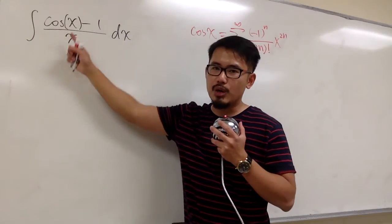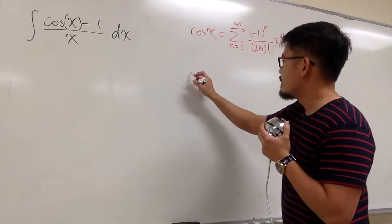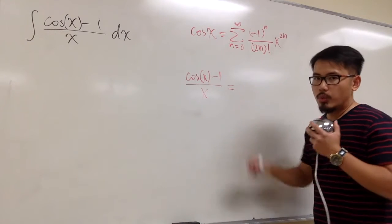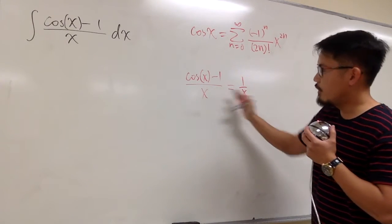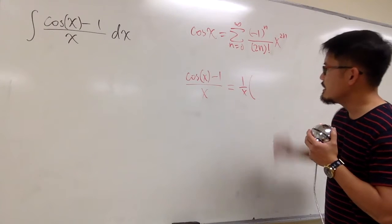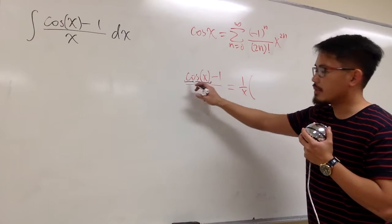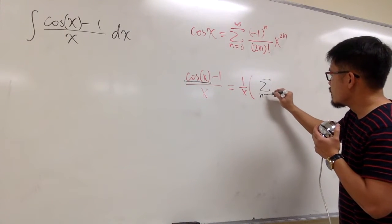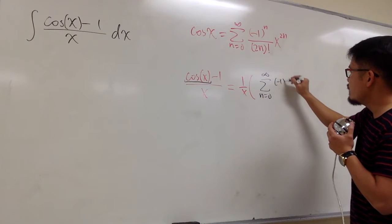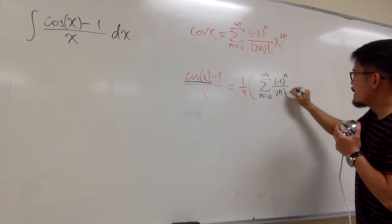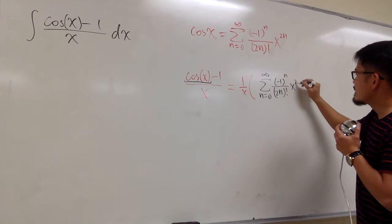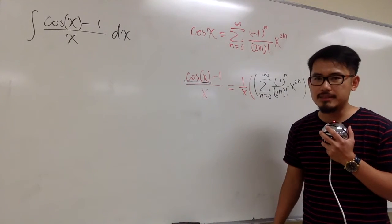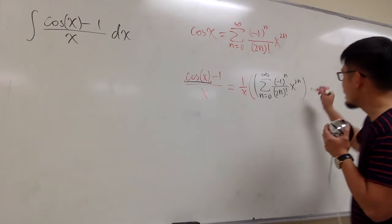Now let's construct the infinite series for cosine of x minus 1, over x. We will write this as 1 over x first, then open the parenthesis. For the cosine of x, we put down sigma of n goes from 0 to infinity, negative 1 to the nth power over 2n factorial, times x to the 2n power. Then we have the minus 1 after that.